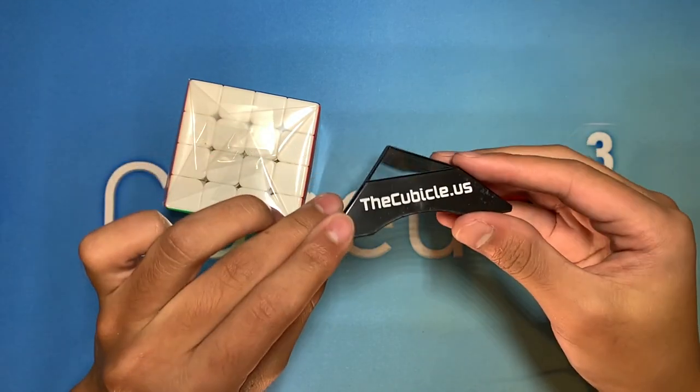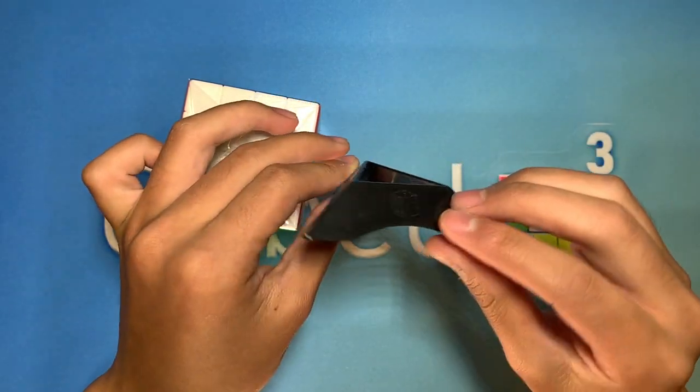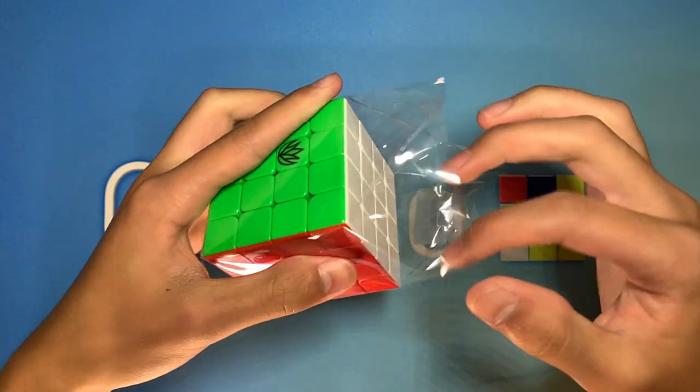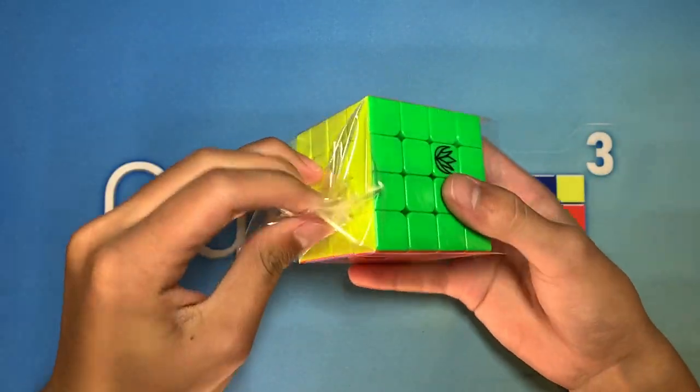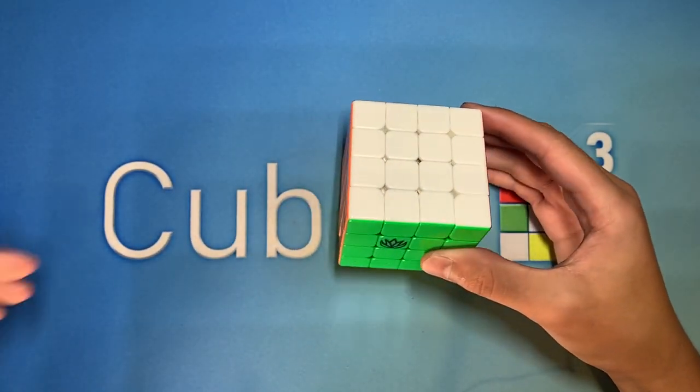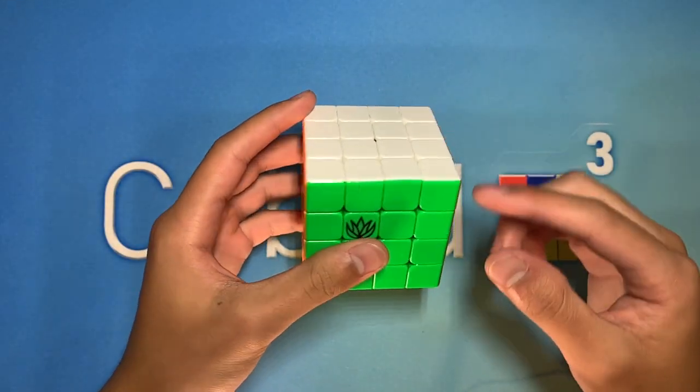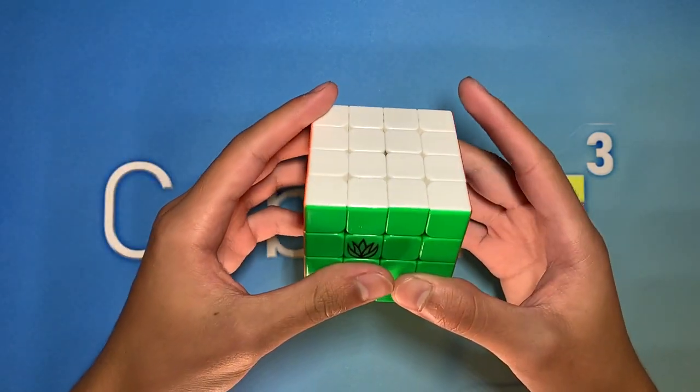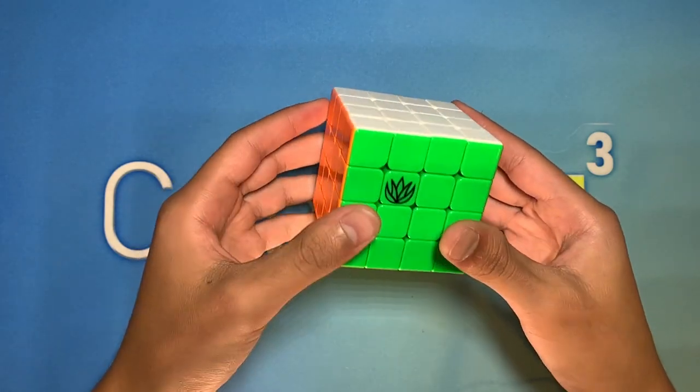So looks like the cube also comes with a cubicle stamp. As of now, I don't actually own any Mystic cubes, and I don't really remember trying any, so I'm not really sure what exactly to expect from this lubricant.